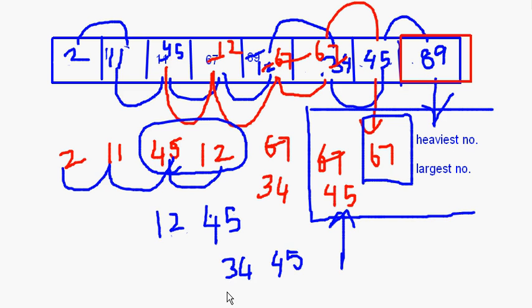You are basically going through the loop and the heaviest element is taken to the end of the array. First it was 89, then 67, then 45, and since there is one more 45 it will come next, then 34, 12, 11 — like this it goes on. This is how your bubble sorting works.